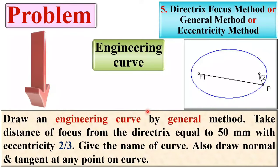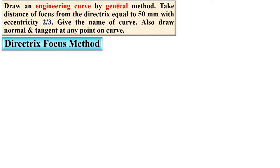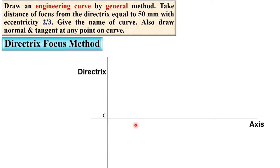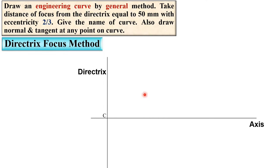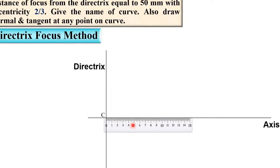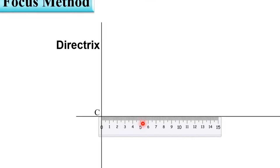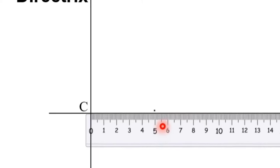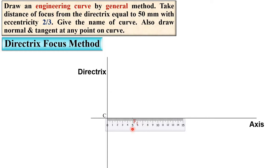Let us solve the problem step by step using the general method, also known as the directrix-focus method. First, draw the vertical line known as the directrix, then take any one point and name it C. Draw the horizontal line passing through this C point, known as the axis line. Both the directrix and axis line are reference lines. Now, the distance of the focus from the directrix is given as 50 mm, so take the scale and mark the focus point F1 exactly 50 mm from the directrix.